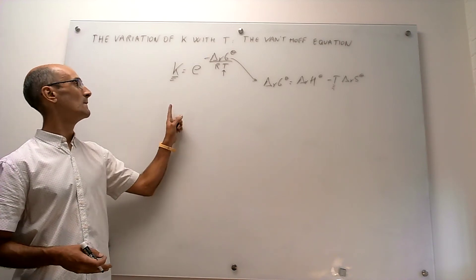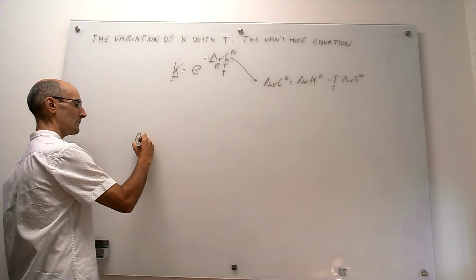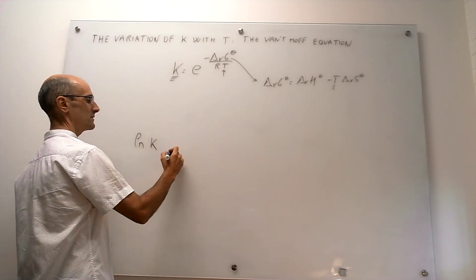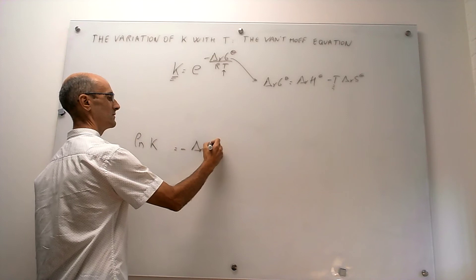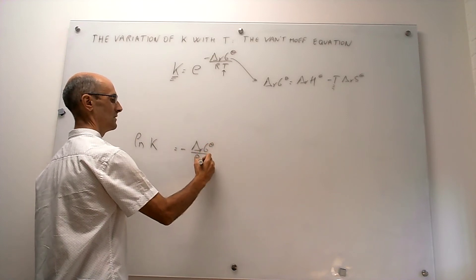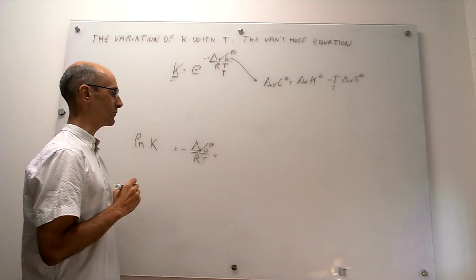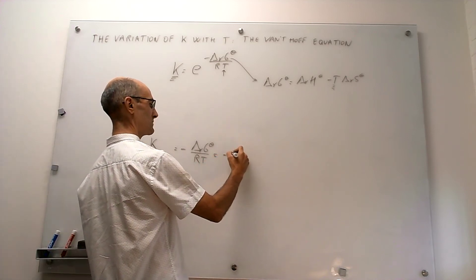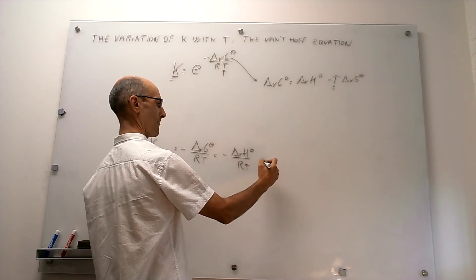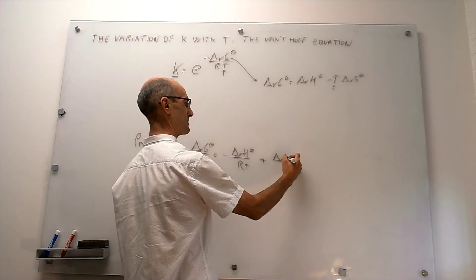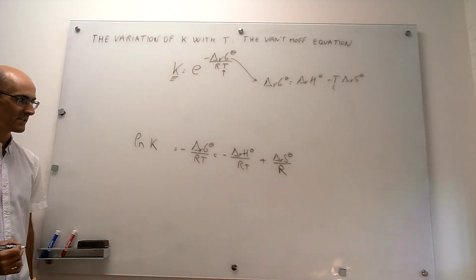Our starting point is going to be the logarithmic version of this expression. If we take the logarithm of that expression, this is going to be: natural log of the equilibrium constant equals minus the reaction Gibbs energy at the standard state over RT. We can unfold this reaction Gibbs energy into enthalpy and entropy components. So this is going to be minus delta_R H standard over RT, plus delta_R S standard over R.